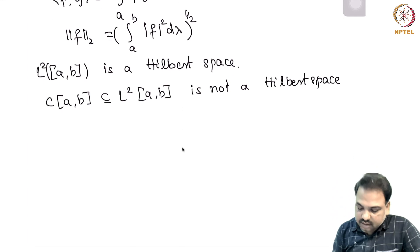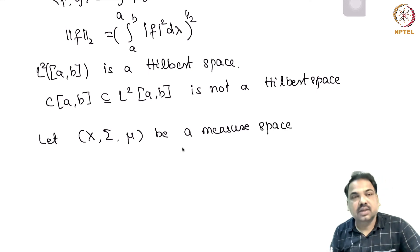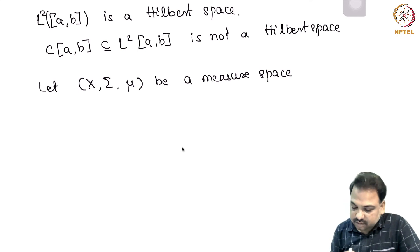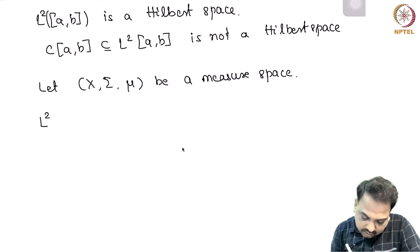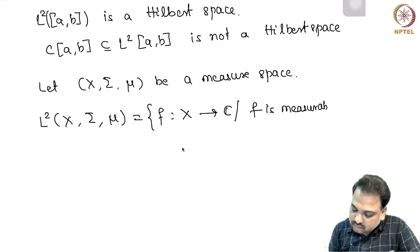So we can still generalize this example. Let us look at (X, Σ, μ) be a measure space. That means X is a nonempty set, Σ is the sigma algebra on subsets of X, and μ is a measure on Σ. Then L^2(X, Σ, μ), as in the earlier case, is the set of all functions from X to C where f is measurable and integral of |f|^2 dμ is finite.